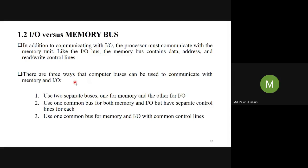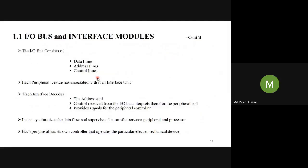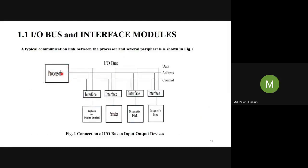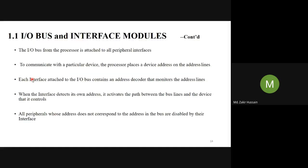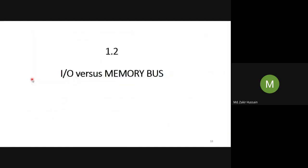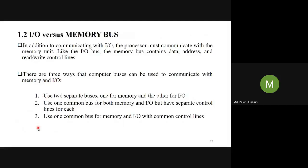There are three ways that computer buses can be used to communicate with the memory and I/O. We are talking about buses including both I/O and memory bus. This processor should be able to communicate with the I/O bus and also with the memory bus. How is it going to handle that? In three ways it is going to handle it.